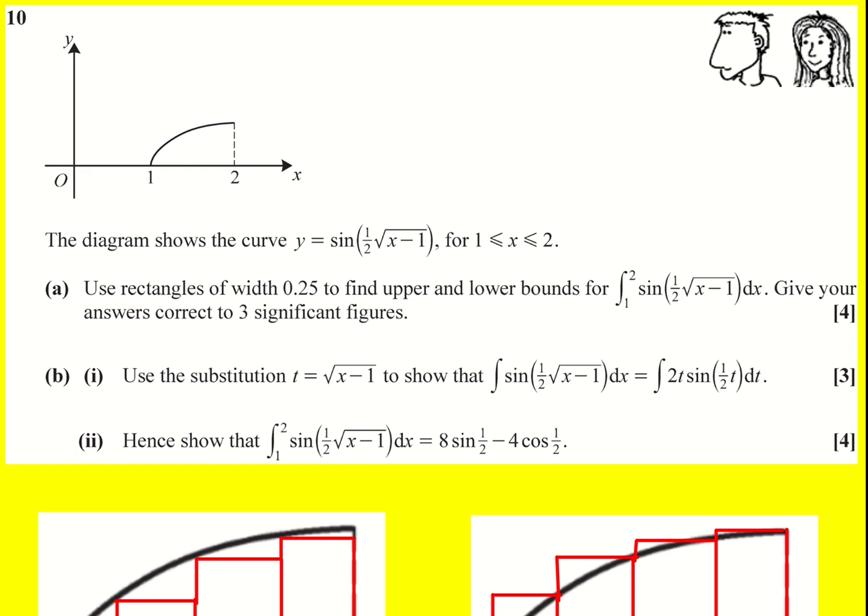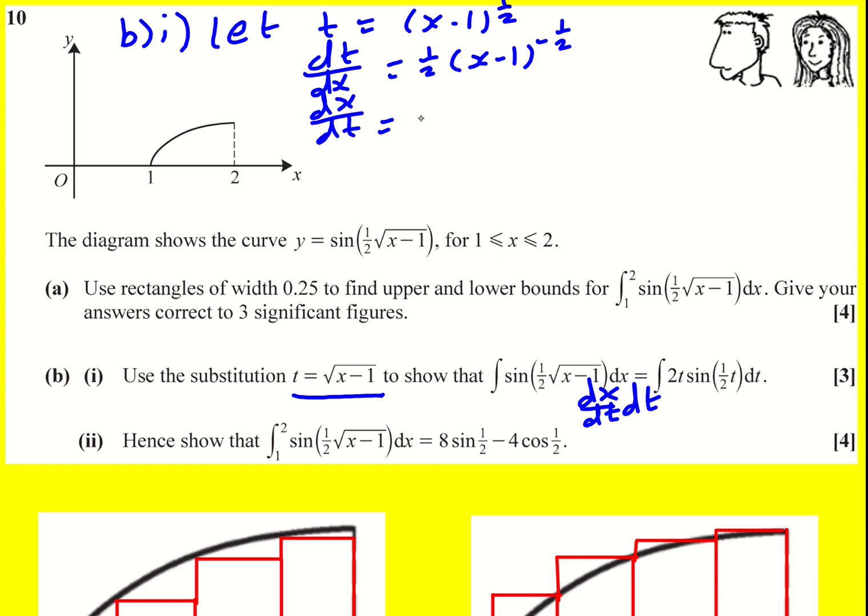Right now we're being asked to do this integral exactly and we're being told the substitution. I'm going to let t equal the square root of x minus one. I'm going to write it straight away in index form because I know that I need to find dt by dx. We're going to be using integration by substitution, that means we need to change dx to dx by dt dt. Using the chain rule this is going to be a half x minus one to the minus the half. This means that dx by dt is going to be two x minus one to the half.